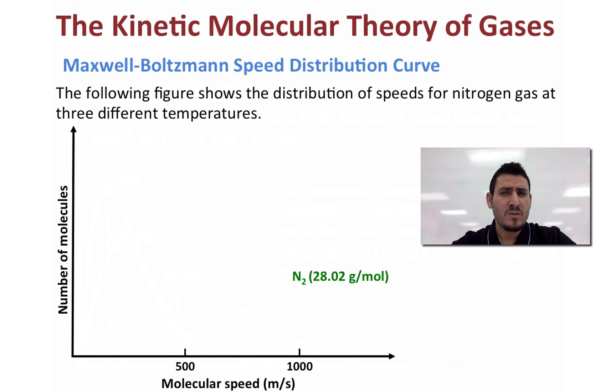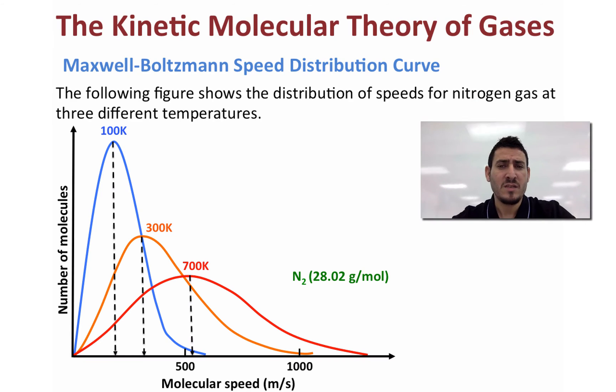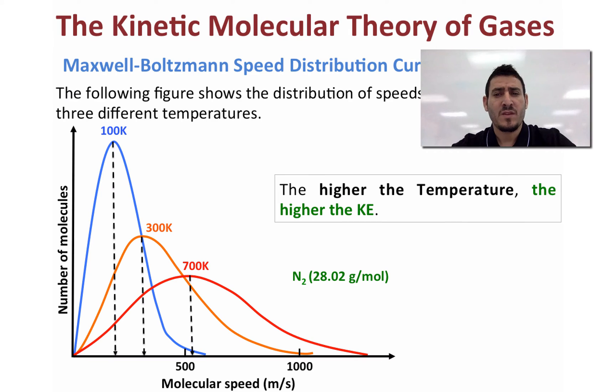Now let's discuss the Maxwell-Boltzmann speed distribution curve. The following figure will show the distribution of speeds for nitrogen gas at three different temperatures. So the first one was recorded at 100 Kelvin, the second one after heating the gas to 300 Kelvin, and the third one is at 700 Kelvin. So every time we can see that when the temperature increases, the average speed increases and also the kinetic energy increases. So we can say that the higher the temperature, the higher the kinetic energy.